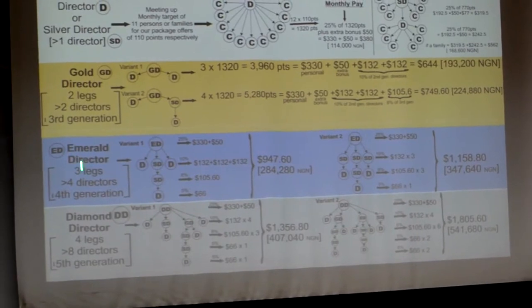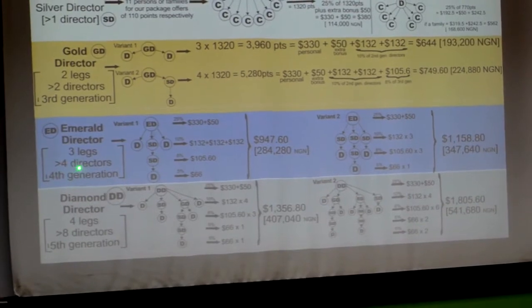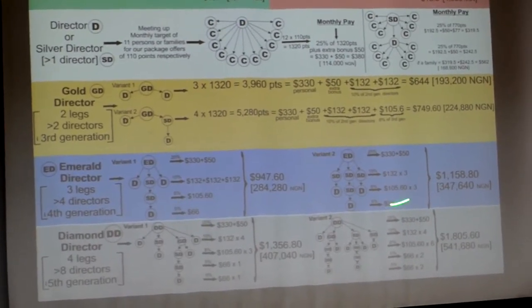Next is the emerald director. It's as if you are developing three legs. Now, you have about a minimum of four director teams till the fourth generation. Again, the calculations or variance of the price.